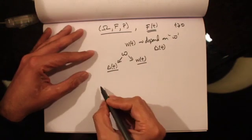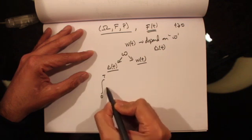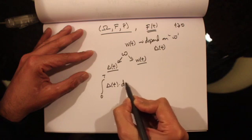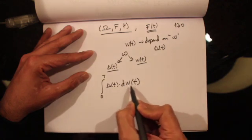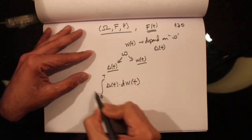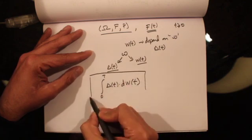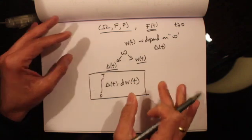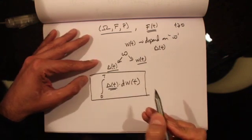In this lecture, we want to define Itô's integral, which is given by the integral from 0 to t of delta(t) dW(t). Here, both the integrator and the integrand are stochastic processes. This is called Itô's integral, and right now we want to talk about it for simple processes.